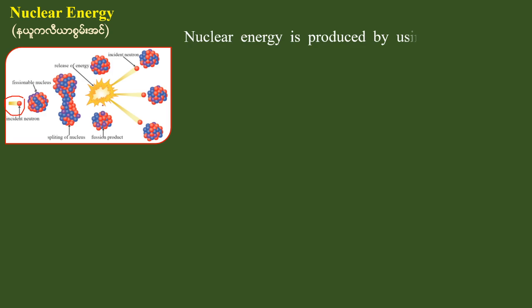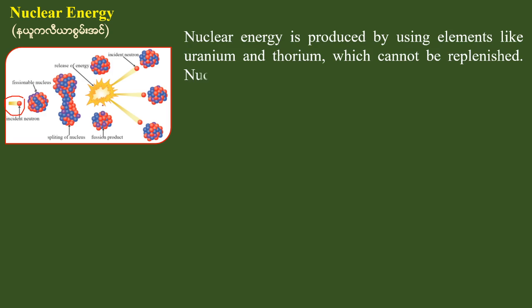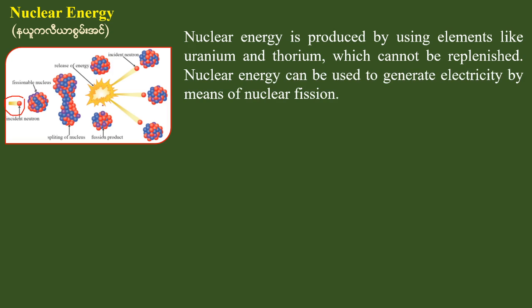Nuclear energy is produced by using elements like uranium and thorium, which cannot be replenished. The uranium and thorium are used as nuclear fuel.